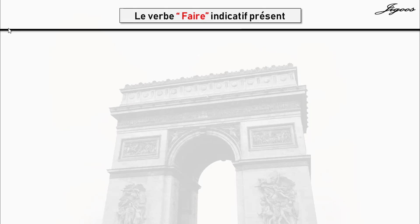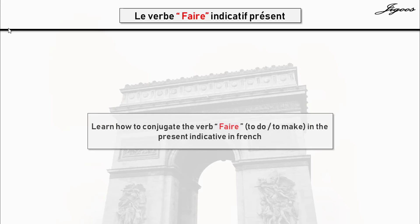Le verbe faire, indicatif présent. This means: the faire verb in present tense. In this lesson, you will learn how to conjugate the verb faire in the present indicative in French — that is, present tense in French. Faire means to do or to make.